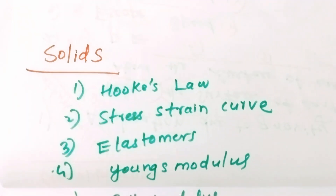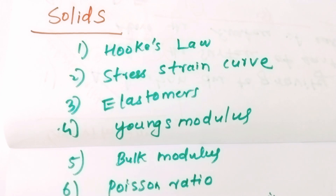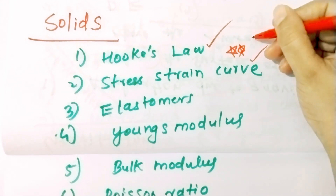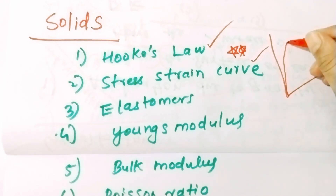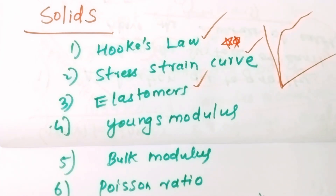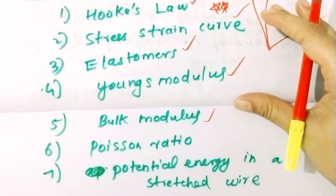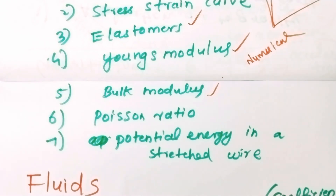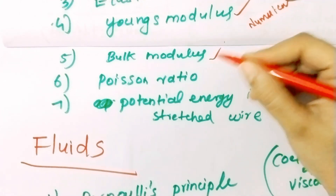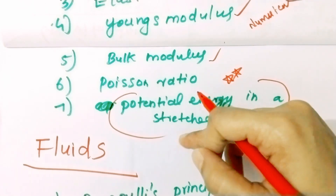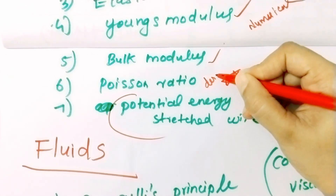Now, mechanical properties of solids. The stress-strain curve is important — study what elastomers are. Young's modulus and bulk modulus will have numerical problems. What is Poisson's ratio? The potential energy of stretched wires is an important derivation.